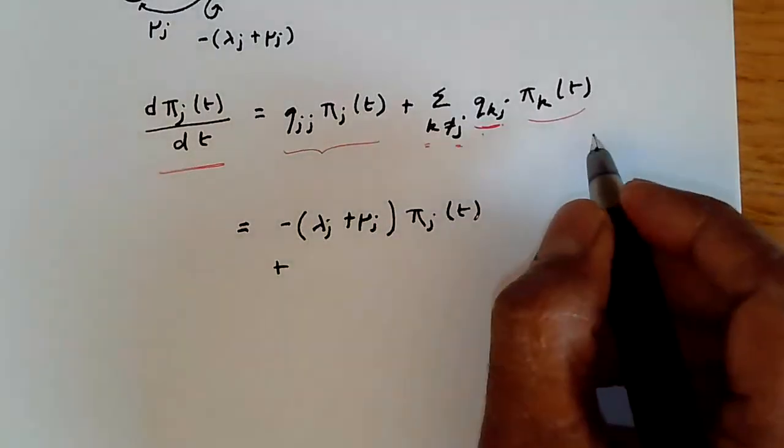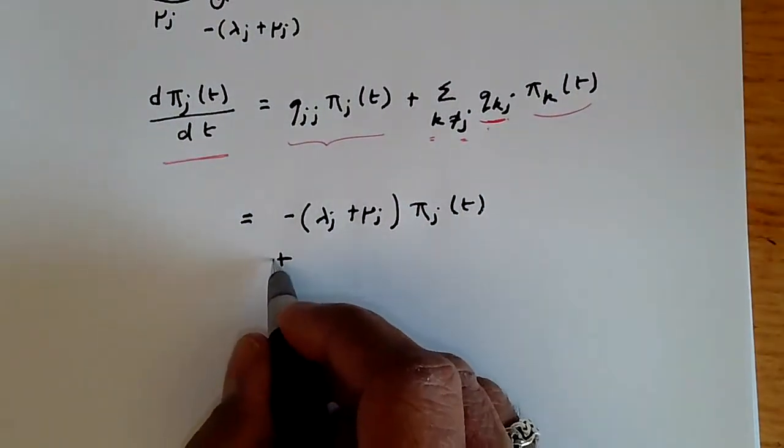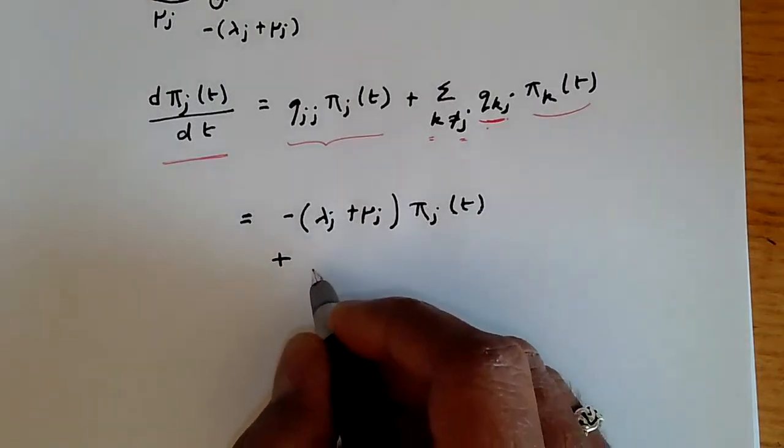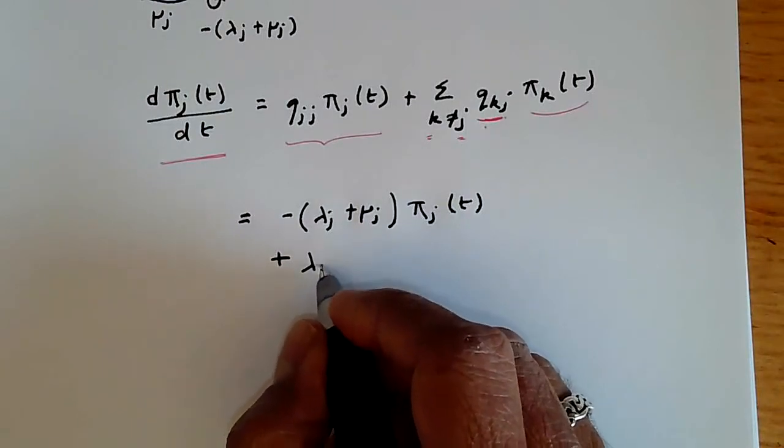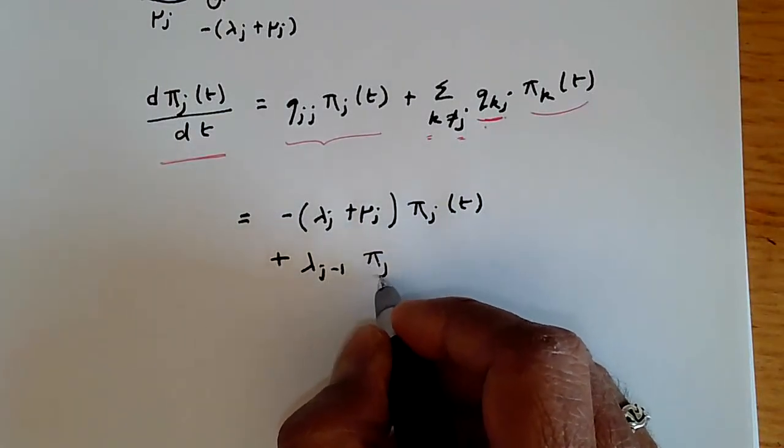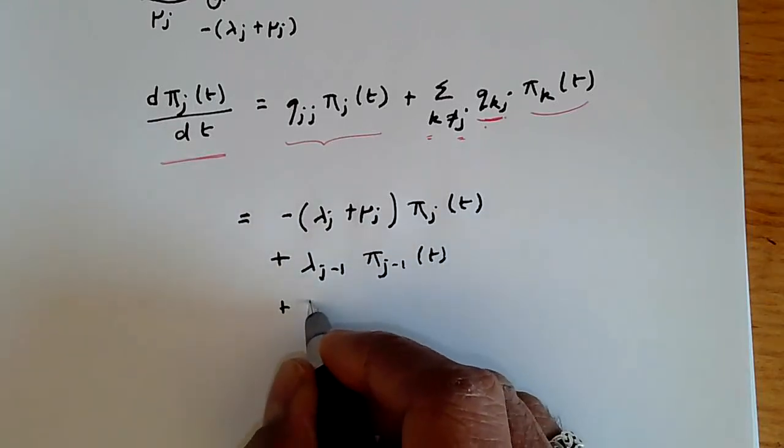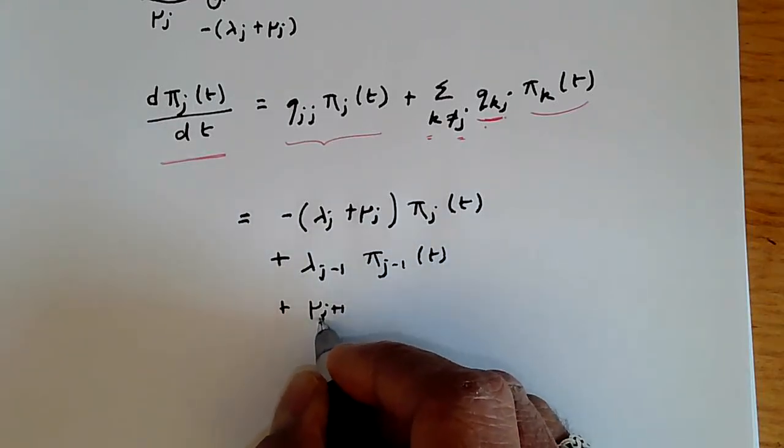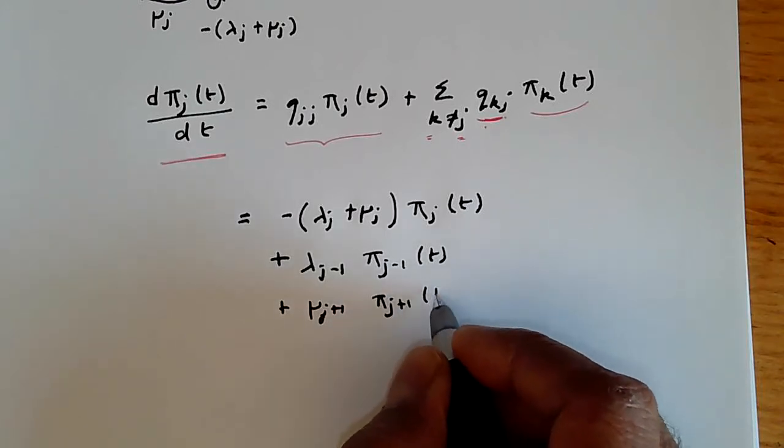we only have two other states that talk to state j, which are j minus 1 and j plus 1. So these values, this expands, as we've seen before, to lambda j minus 1 pi j minus 1(t) plus mu j plus 1 pi j plus 1(t).